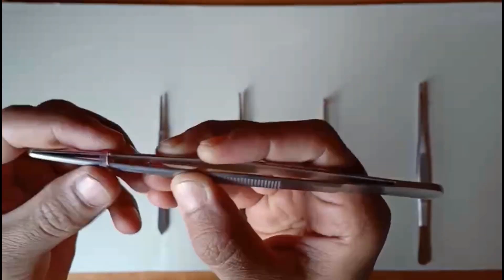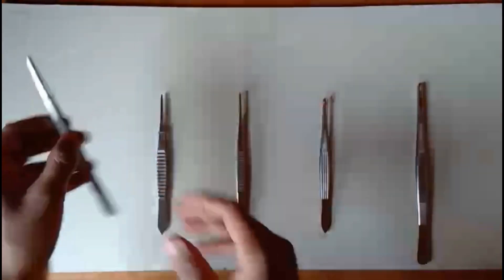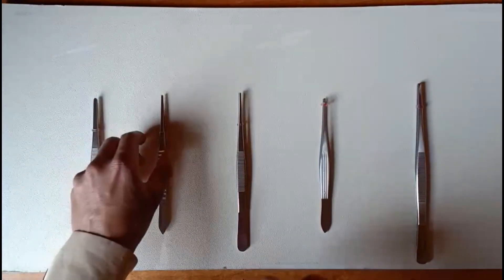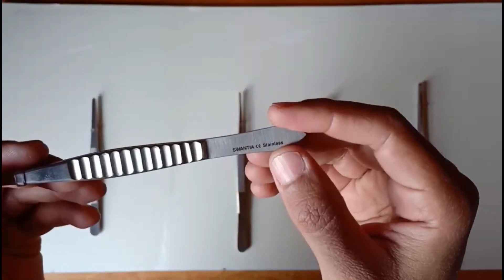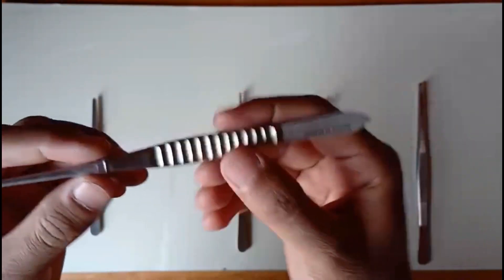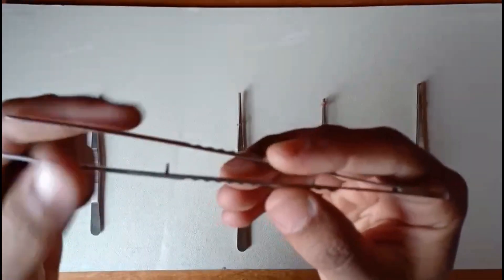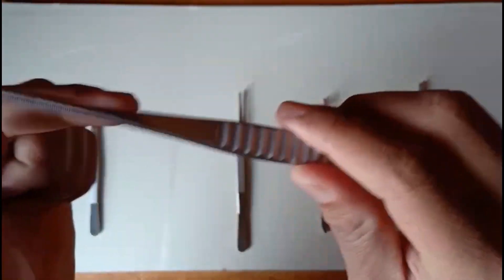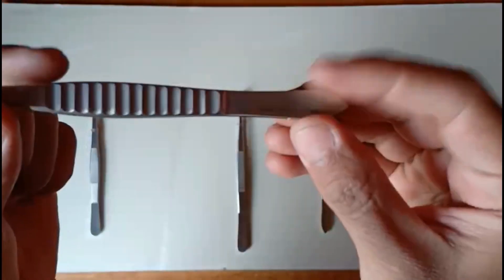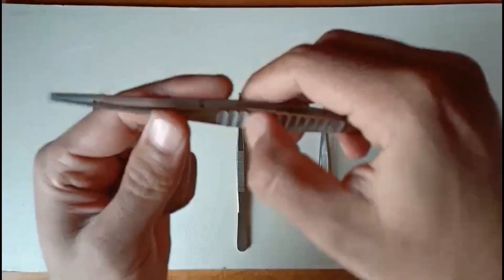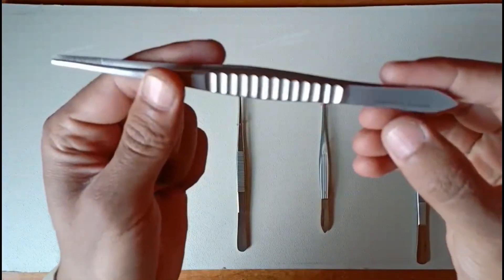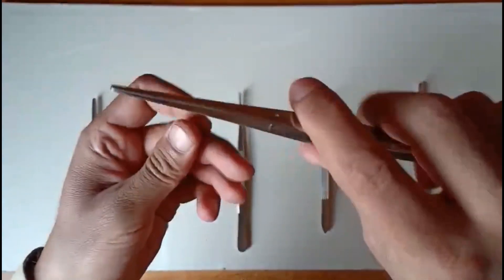The second type is a USA-type dissecting and tissue forceps in the category of thumb tissue forceps. It's straight and has serrations as well, with a nice quality grip. The CE stainless mark is visible here, and the lock is nicely hinged.